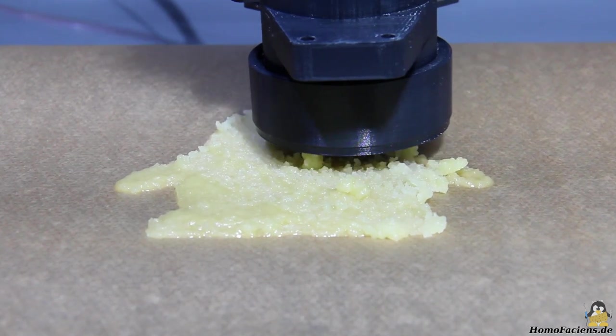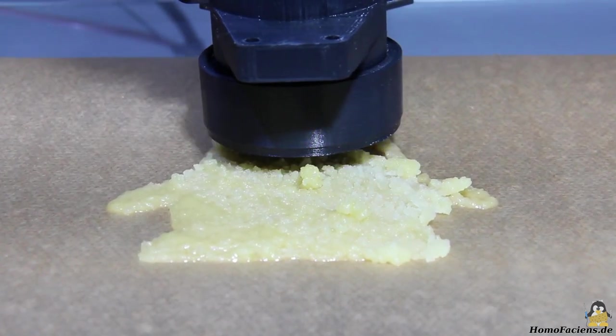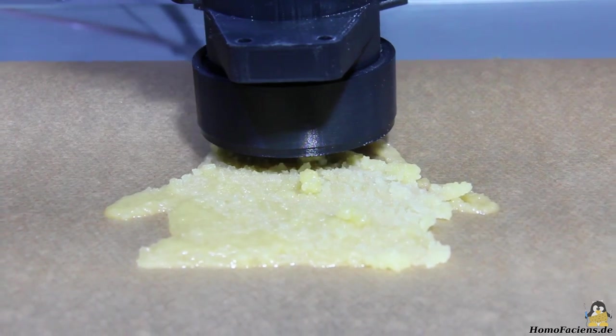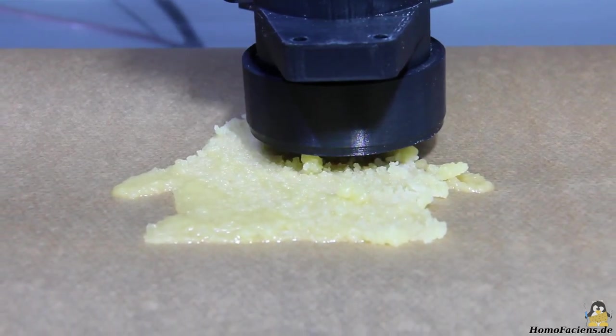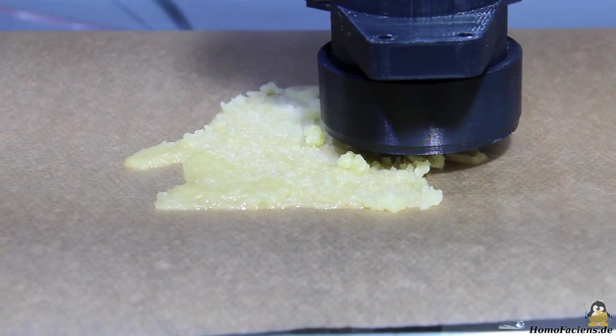Melted butter as a lubricant did not result in a nice and smooth print. At first a bit too much butter was pressed out of the extruder and later the dough became clumpy.